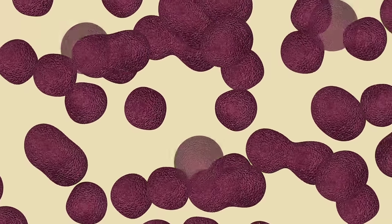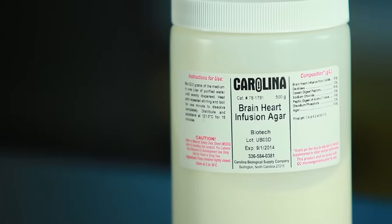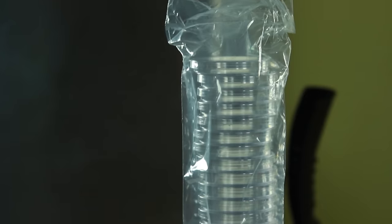When growing cells in the lab, we have to create these conditions using culture media. Solid culture media is a mixture of agar and nutrients poured into petri dishes.